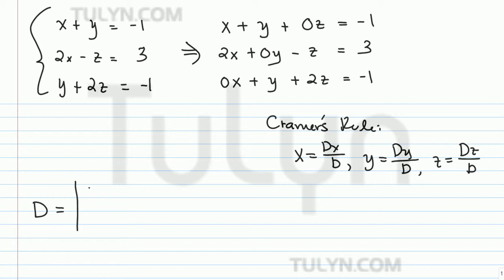D is found by writing out the coefficients for each of the variables. The first column is the x coefficients: 1, 2, 0. The second column is the y coefficients, and the last column is the z coefficients. I'm going to use expansion of minors, and generally the best thing to do is pick the column or row with the most zeros or the smallest positive numbers. It looks like our best bet here would be the first row.